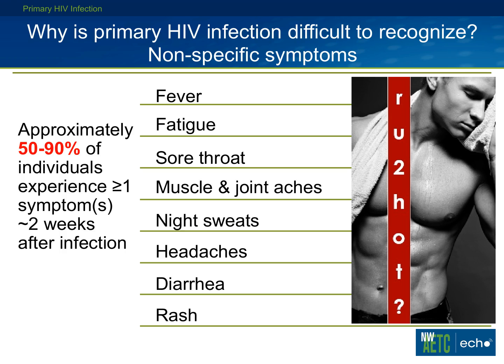Now that I've hopefully convinced you that recognition of primary infection is important, I'll also tell you that it's really difficult. Although about half to nearly all people who acquire HIV will have at least one symptom of the acute retroviral syndrome in the first two weeks after getting infected, the symptoms are really nonspecific: fever, rash, sore throat, fatigue, viral-like illness. It's often not recognized even when people go into emergency rooms and other primary care providers.